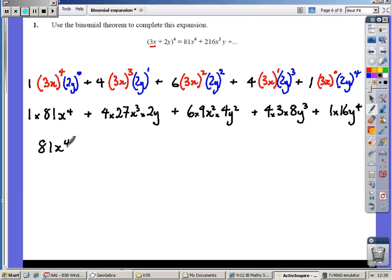81x to the power 4, which we were expecting from the part of the answer we were given. Verify this next part is 216x cubed y. 6 times 9 times 4, once again 216, this time x squared, y squared. Our next one, 4 times 3 times 8, we have 96xy cubed, and finally 16y to the power 4. And we've completed our binomial expansion for 3x plus 2y to the power 4.